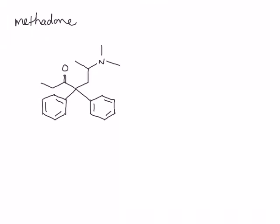The chiral center in methadone is this one. It is the only sp3 hybridized carbon with four different groups on it. As I mentioned before, methadone is an analgesic, and the R enantiomer is significantly more active than the S enantiomer.